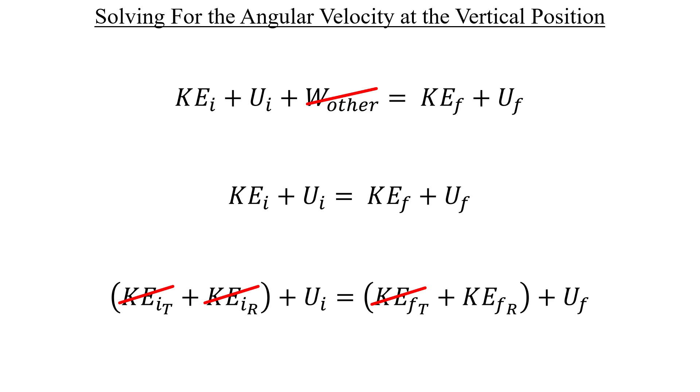Also, since we set the Y value of the ball to zero in the final position, that means we can set the final potential energy here to zero as well. So we've whittled this expression down to just a single term on both sides. But be careful here because the potential energy term on the left applies to just the ball, whereas the rotational kinetic energy term over on the other side applies to both. Let's clean this slide up and take a closer look at what's going on here.